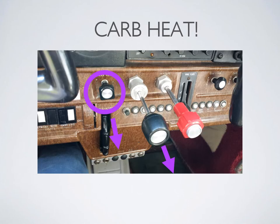This is really important: get into the habit of pulling your carb heat out before you bring your power back to a low power setting. An easy way to remind yourself is that when you close the throttle or pull your power back fully, you move the carb heat knob in the same direction, and you do it first. Later, when you open the throttle to get power again, you push the carb heat knob back in as you push the throttle forward — they move in the same direction.